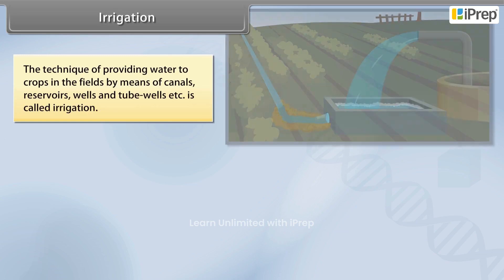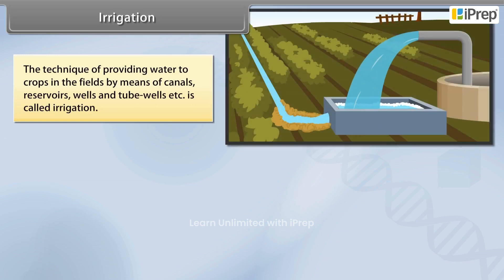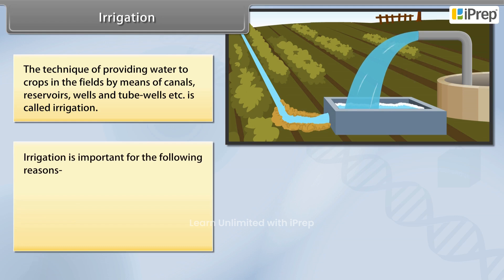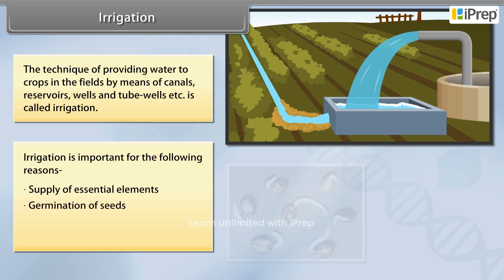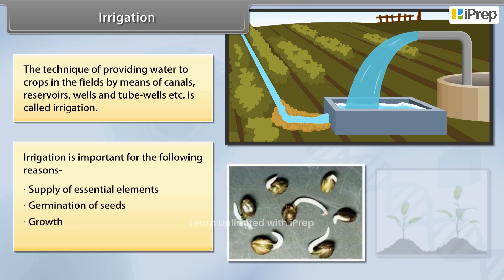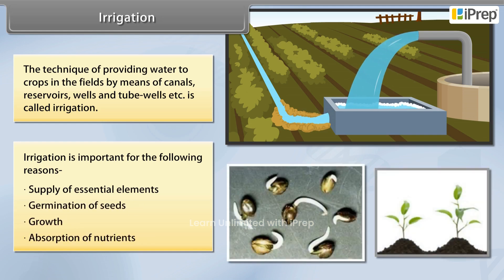Irrigation is the technique of providing water to crops in the fields by means of canals, reservoirs, wells, and tube wells. Irrigation is important for the following reasons: supply of essential elements, germination of seeds, growth, and absorption of nutrients.